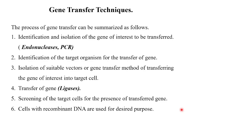The gene transfer process can be summarized as follows. First is identification and isolation of the gene of interest, using techniques and enzymes like endonucleases and PCR. Then identification of the target organism for the transfer of the gene — in the experiment we decide the suitable target organism where we want our gene expressed. Then isolation of suitable vectors or gene transfer method for transferring the gene of interest into the target cell — this is where we select the suitable gene transfer method.